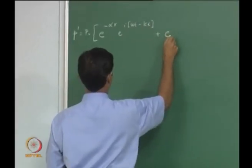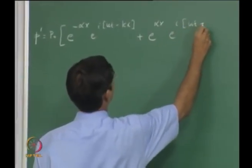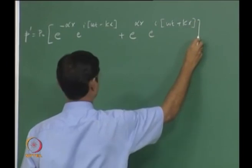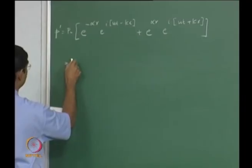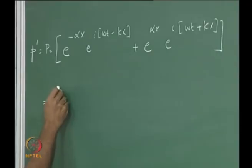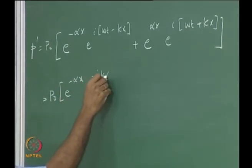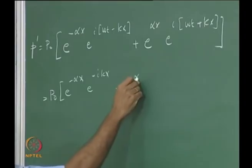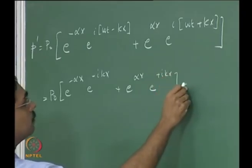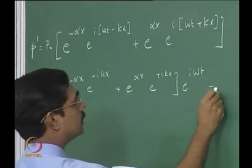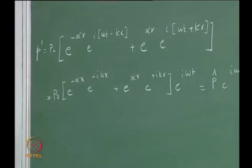This was the right running wave, plus e^(αx) * e^(i(ωt + kx)). We can write this as p_hat * e^(iωt), where p_hat is indeed the complex amplitude. So we can expand it for convenience: p_hat equals p naught times e^(-αx) * e^(-ikx) plus e^(αx) * e^(ikx), all times e^(iωt).